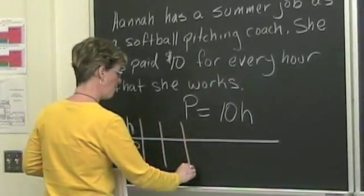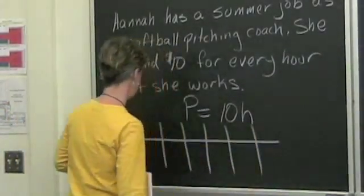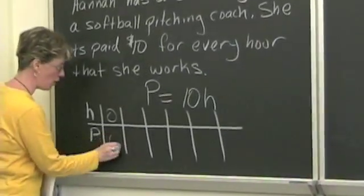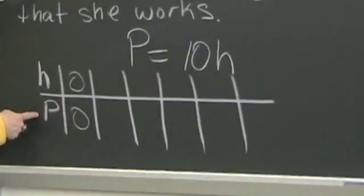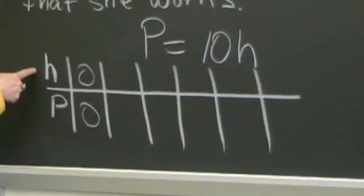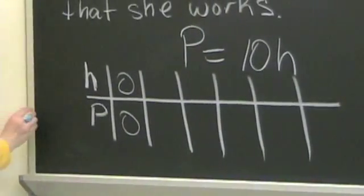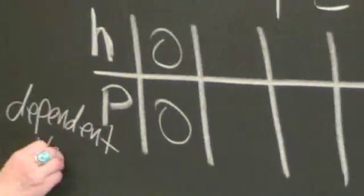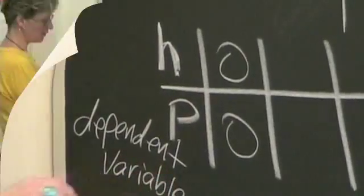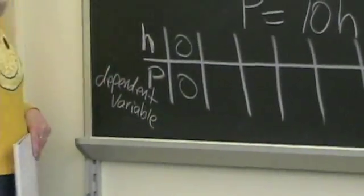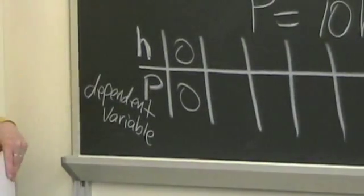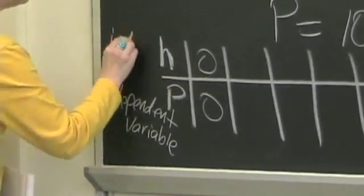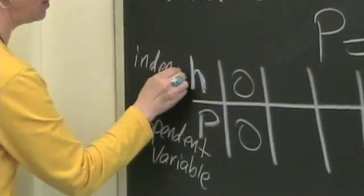So let's just play with this and get several different results. If she does not work any hours at all, she's going to make no money. So you can see that the amount she's paid is going to depend on the hours she works. So P is what we call the dependent variable. So your pay depends on the hours worked. And you can work however many hours you want to. So the hours worked actually is kind of independent. It can do what it wants to do. So we call this the independent variable.